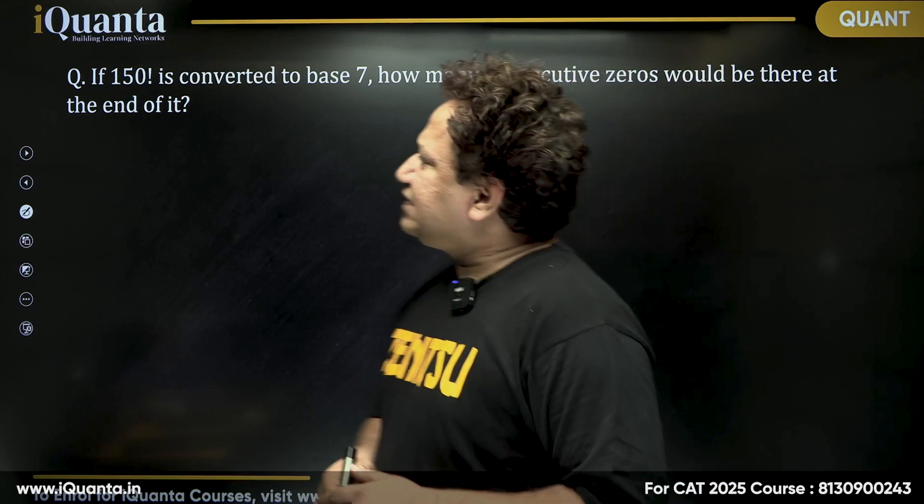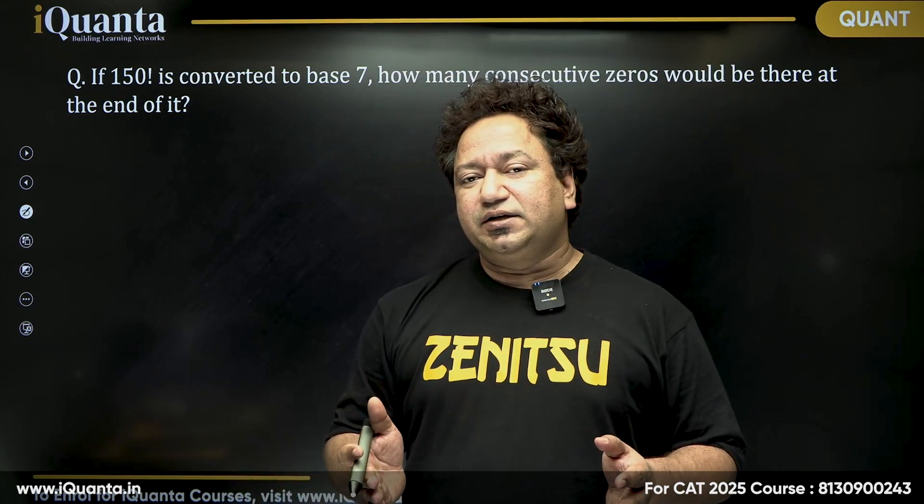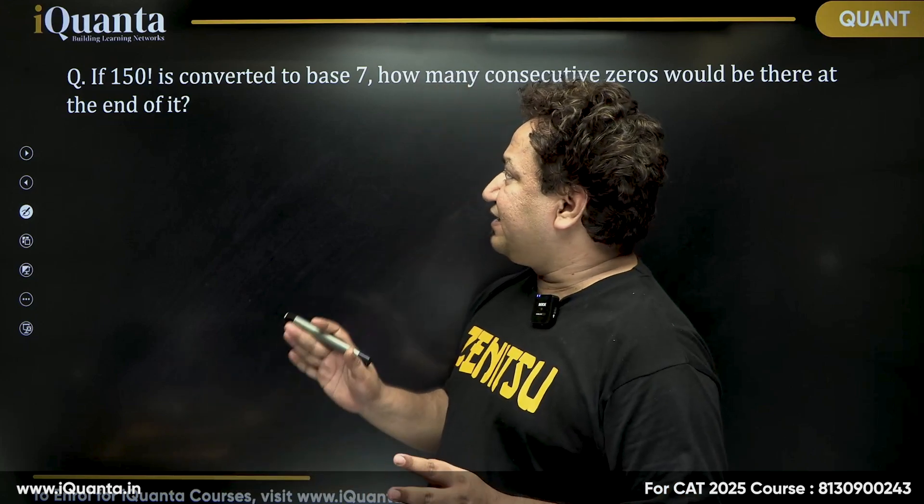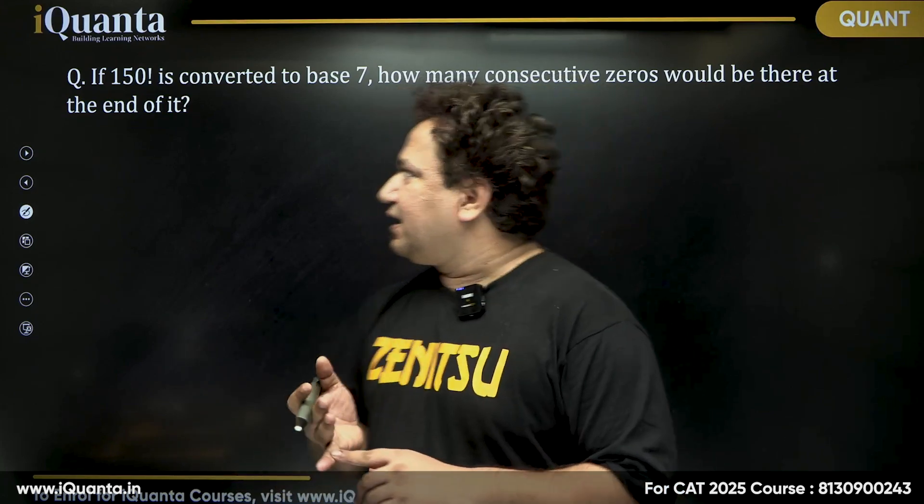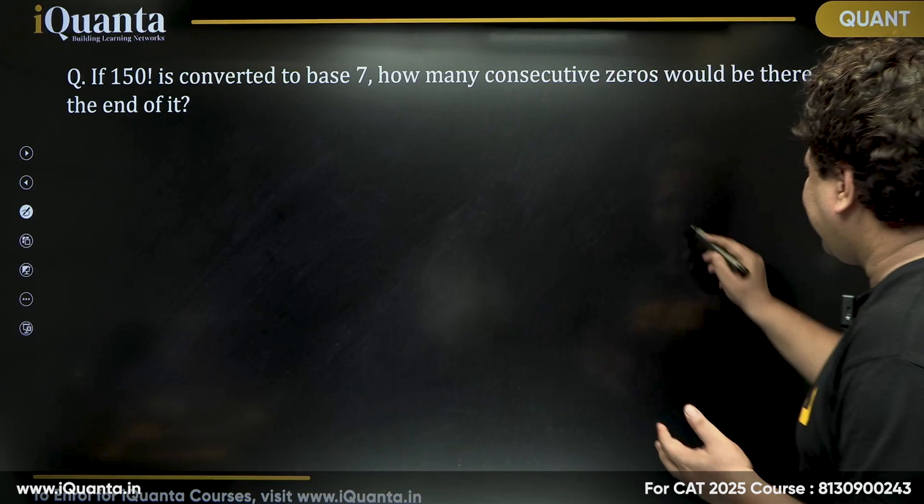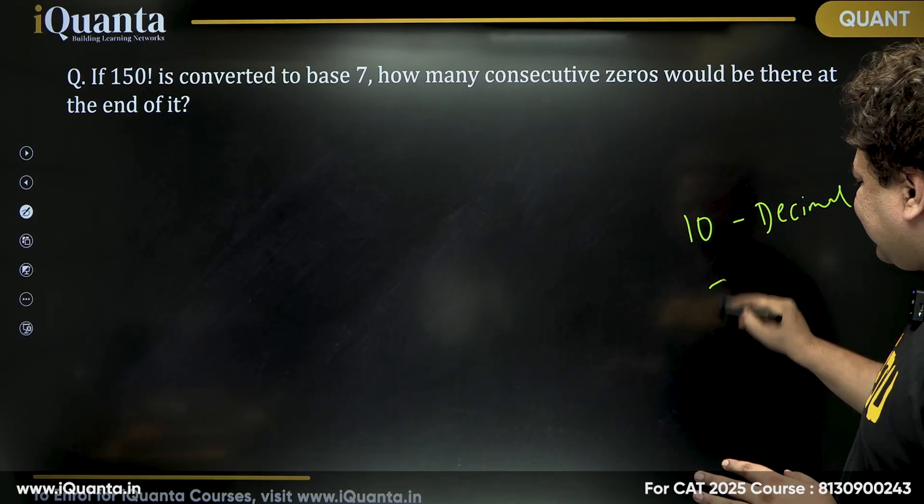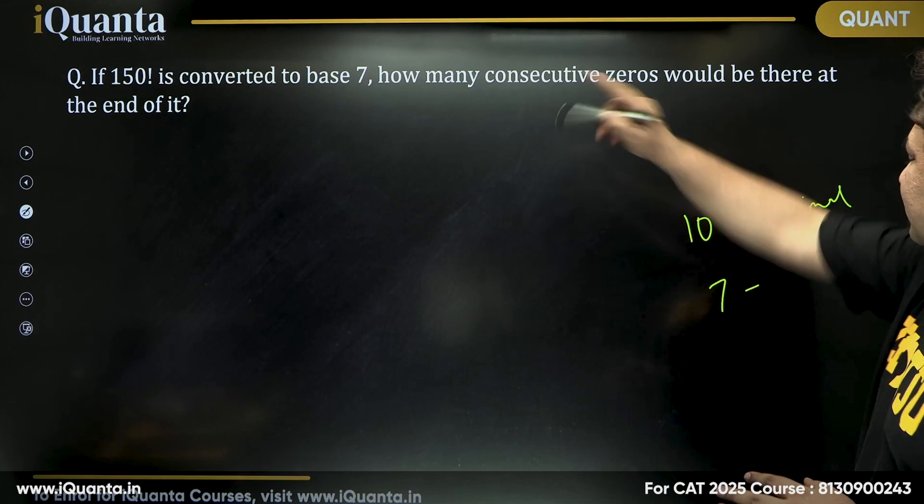Now, once you convert to base 7, that means the digits 7, 8, 9 would be gone. So we'll be having only 7 digits, that is 0, 1, 2, 3, 4, 5, 6. So whatever is 10 in decimal number system, it is 7 in base 7.